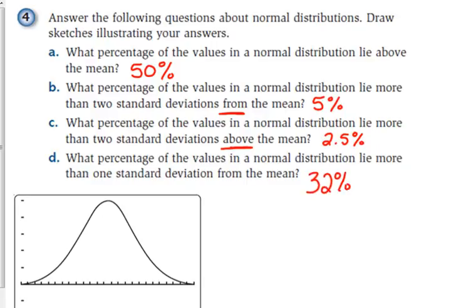32% of your data is more than one standard deviation from the mean. That's above and below. If it was just above, we're narrowing it down to 16% above and 16% below one standard deviation.